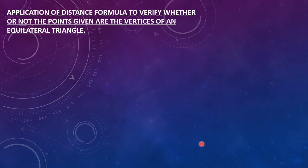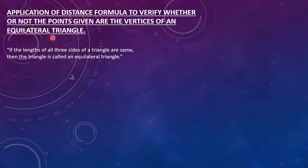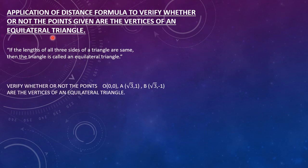Now we are going to see how to apply the distance formula to verify whether or not the points given are the vertices of an equilateral triangle. An equilateral triangle is one in which the lengths of all three sides are the same. Verify whether or not the points O(0,0), A(√3,1) and B(√3,-1) are the vertices of an equilateral triangle. Hopefully the concept is very clear to you and you can solve this question on your own, and solve the relevant questions from exercise 9.2 at your own. Stay home, stay safe. Thank you. Allah Hafiz.